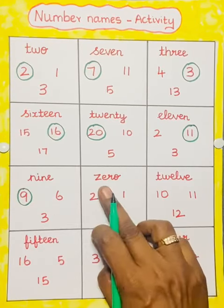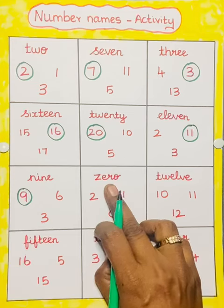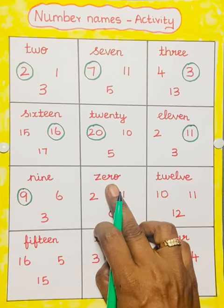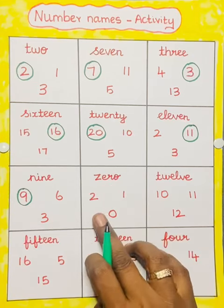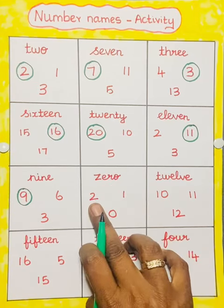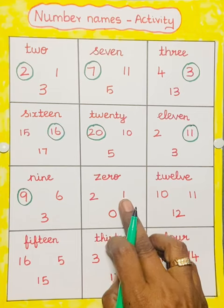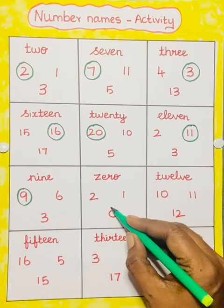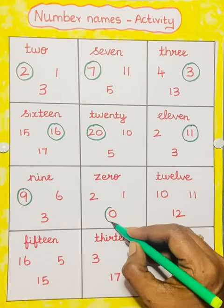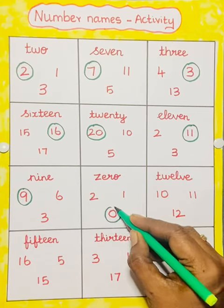Next one: 0. Z-E-R-O. 0. This is 2. 1. 0. So we have to circle the number 0.